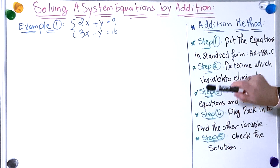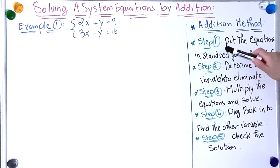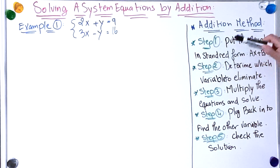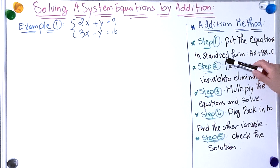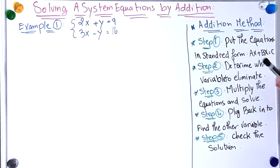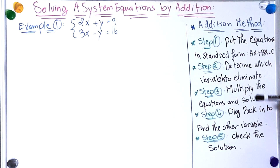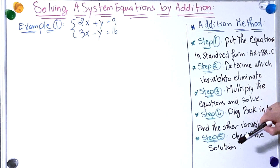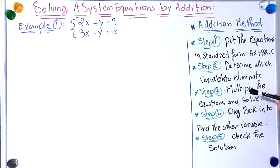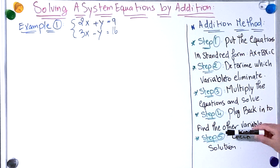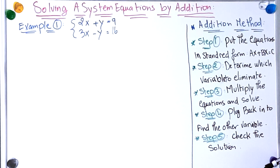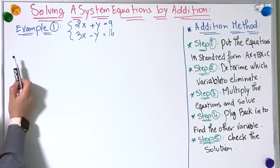Today we're going to learn how to solve a system of equations by the addition method. Here are the steps we follow: the first step is to put the equations in standard form as ax plus bx equals c. The second step is to determine which variable to eliminate. The third step is to multiply the equation and solve. The fourth step is to plug back in to find the other variable, and the last step is to check the solution. Now let's move to the first example.